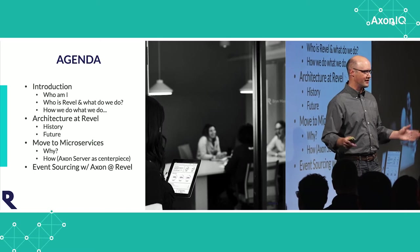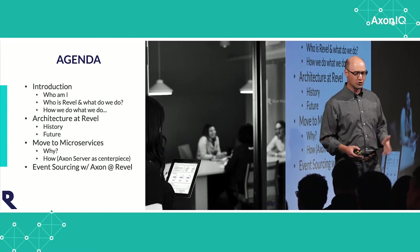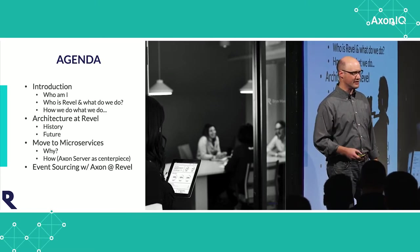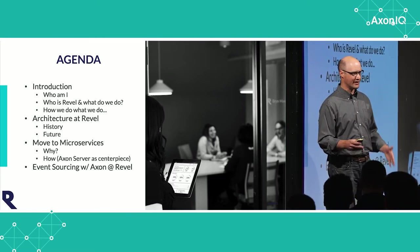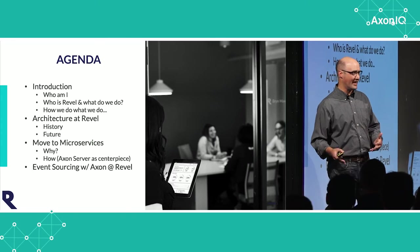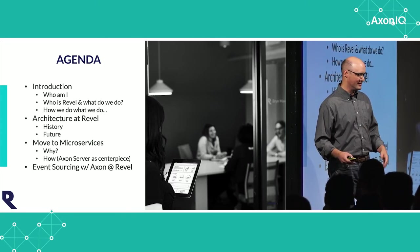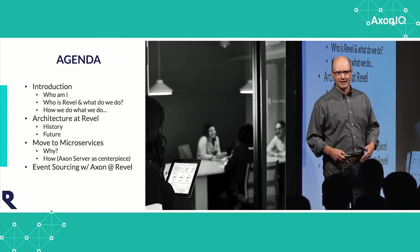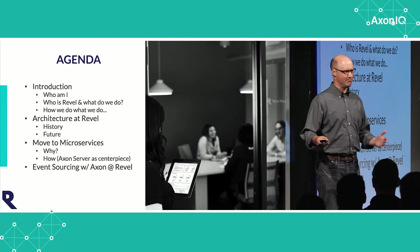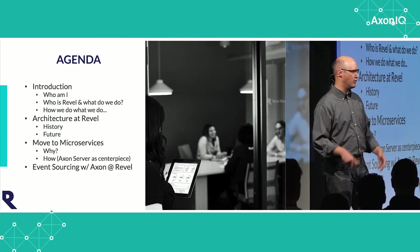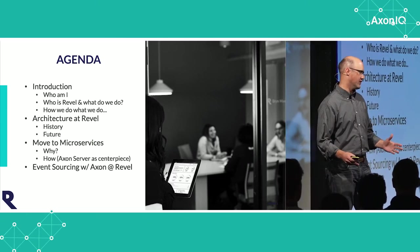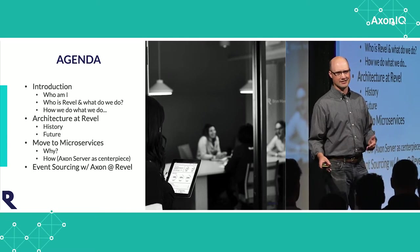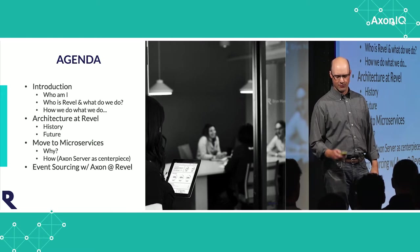First, a little bit about what do we do, who am I, who is Revel, what do we do, and how we do that. Then a little history of our architecture — how we arrived to where we're at now and why we chose to go there. A little bit more about microservices, how we approach them, and how Axon Framework and Axon Server was a very easy fit for us. And finally, a few details of how we've implemented things using Axon at Revel.